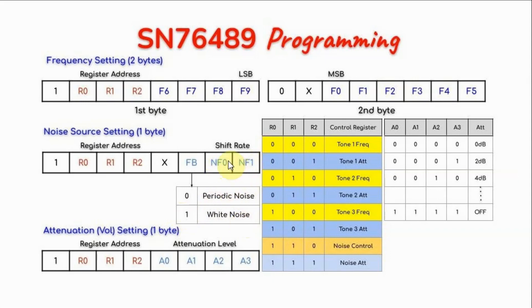And these two bits here determine the shift rate, or the frequency of the noise signal, and we have three different frequencies for values 0, 0, 0, 1, and 1, 0.